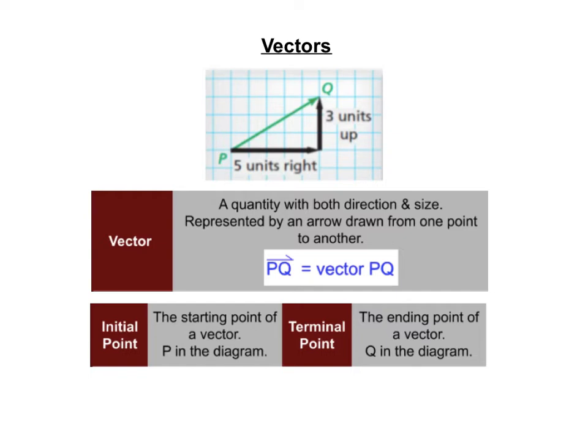We represent a vector by an arrow drawn from one point to another on grid paper. The initial point of the vector is the starting point of the vector and that's P in the diagram here. The initial point is the side of the vector that doesn't have the arrow on it. It's your starting point. We're starting at P.